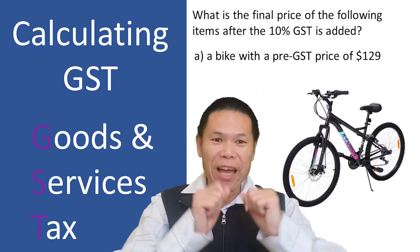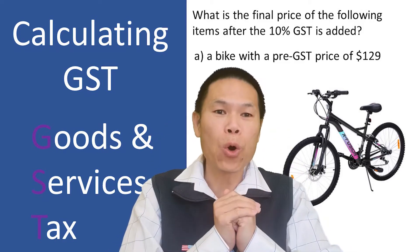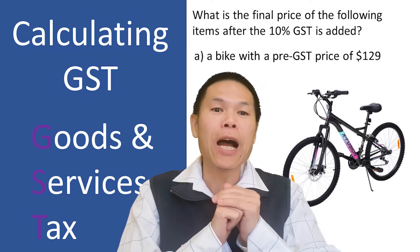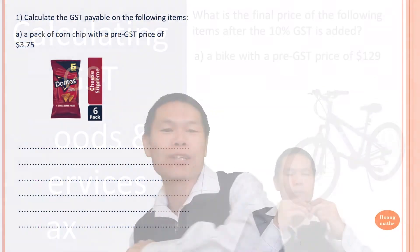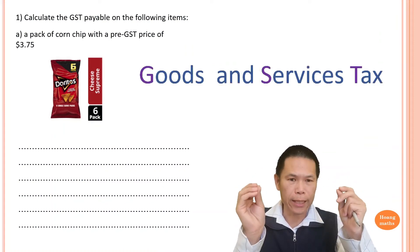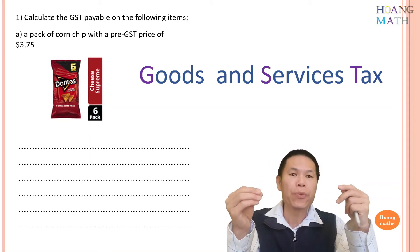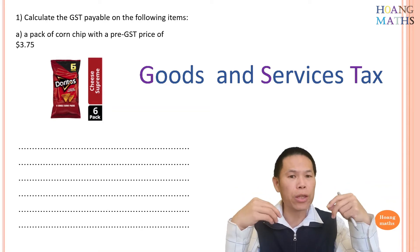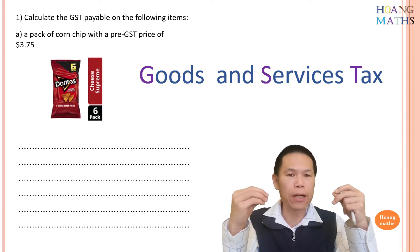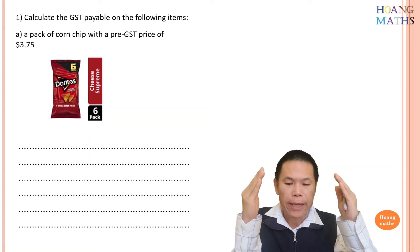Hi there, hope you have a fantastic day. Today I'm going to teach you how to work out GST. There's a PDF file in the description below for you to download if you like. GST stands for Goods and Services Tax. When we buy an item in Australia, we need to pay 10 percent tax on the products that we buy. Let's go through a couple of examples.